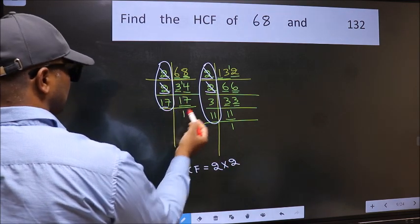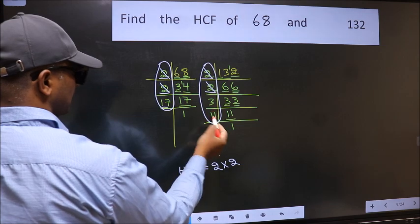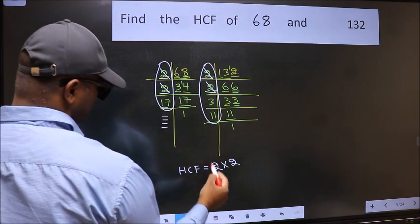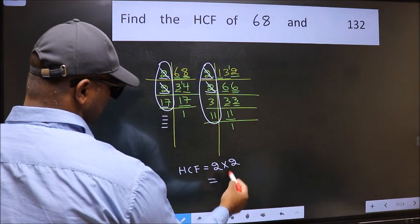Next number 17. Do we have 17 here? No. No more numbers are left out. So our HCF is 2 into 2, 4 is our HCF.